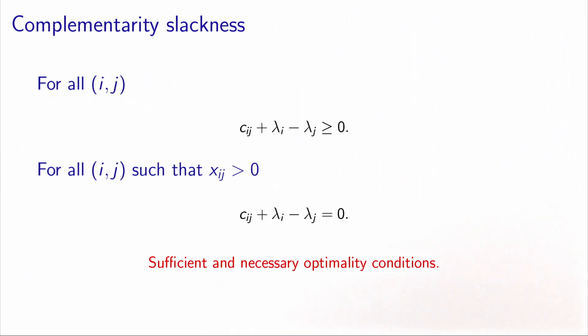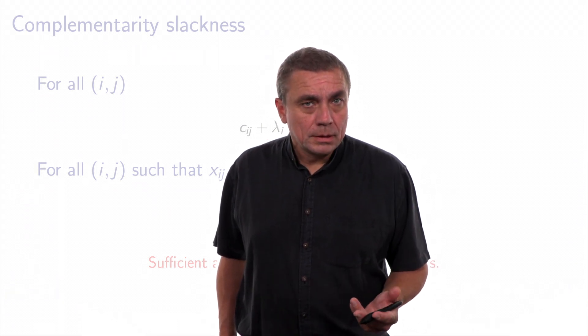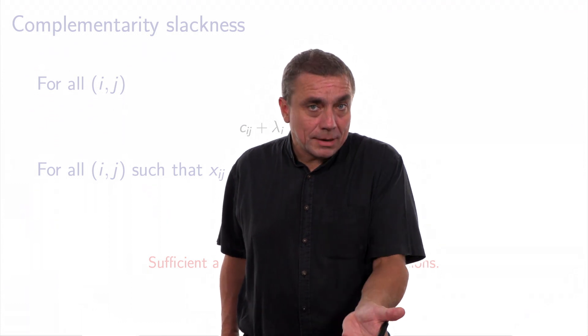Interestingly, the dual variables lambda play an interesting role here. Only the difference of these variables matter. So the value itself is not really important. What is important is the difference between these values. Later on, we will see an instance of the transshipment problem called the shortest path problem. And in that very context, we will give an interpretation to the lambdas, to the dual variables associated with the nodes.